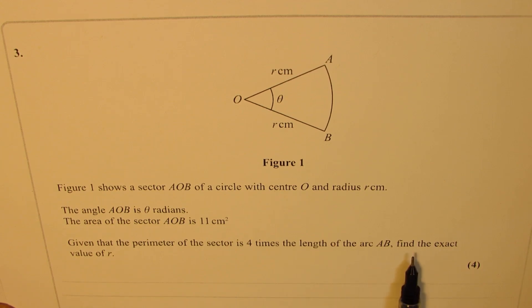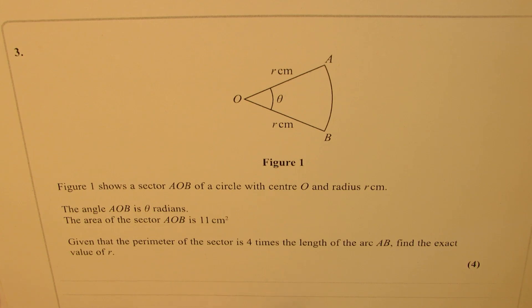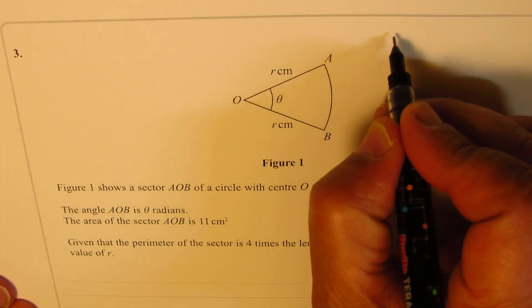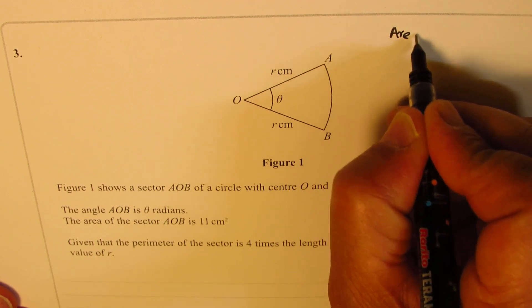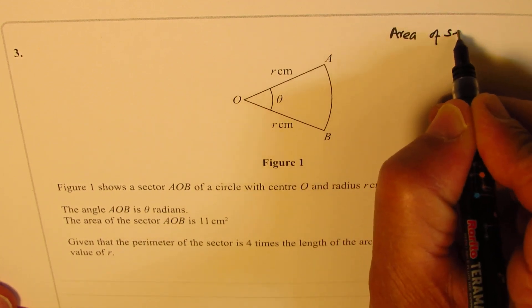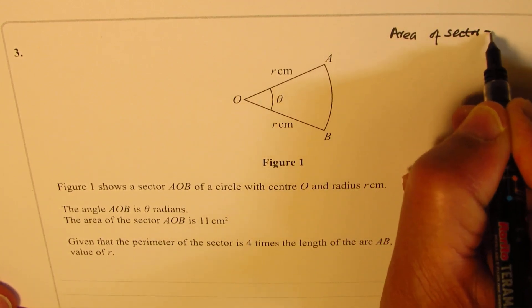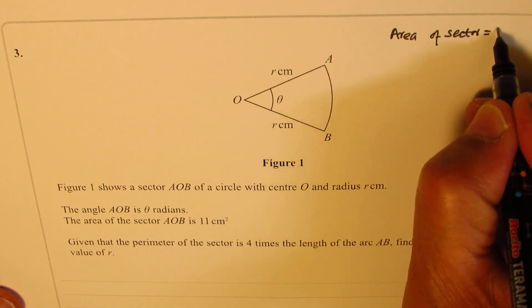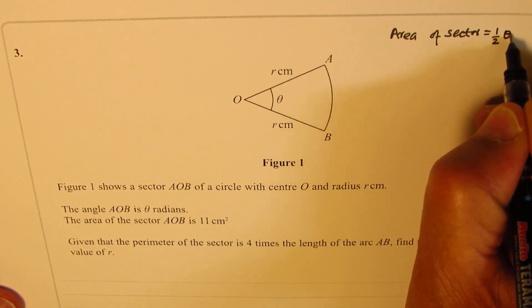Right, so the formulas which you should know is area of the sector. Let me write down the formulas that should help you to solve this question. Area of sector - what is the area of sector formula? It is half theta r squared, so half times theta times r squared. That is the area of the sector.